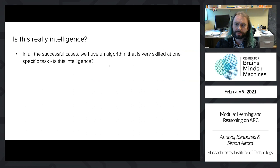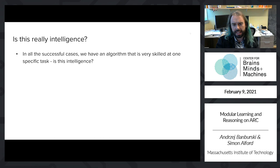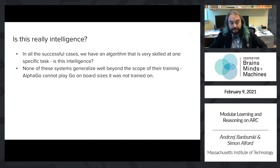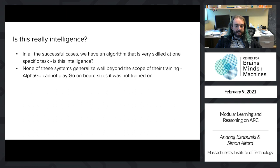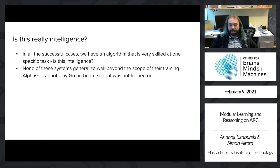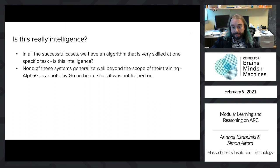In all of these successful cases, what we actually have are algorithms that are very skilled at one specific task. None of these systems really generalize beyond the scope of what they're trained on. For example, AlphaGo can beat the best human at Go but cannot play on board sizes it was not trained on, whereas a professional or even an amateur given a non-standard board size will pretty well extrapolate the techniques they've used successfully on normal board sizes.